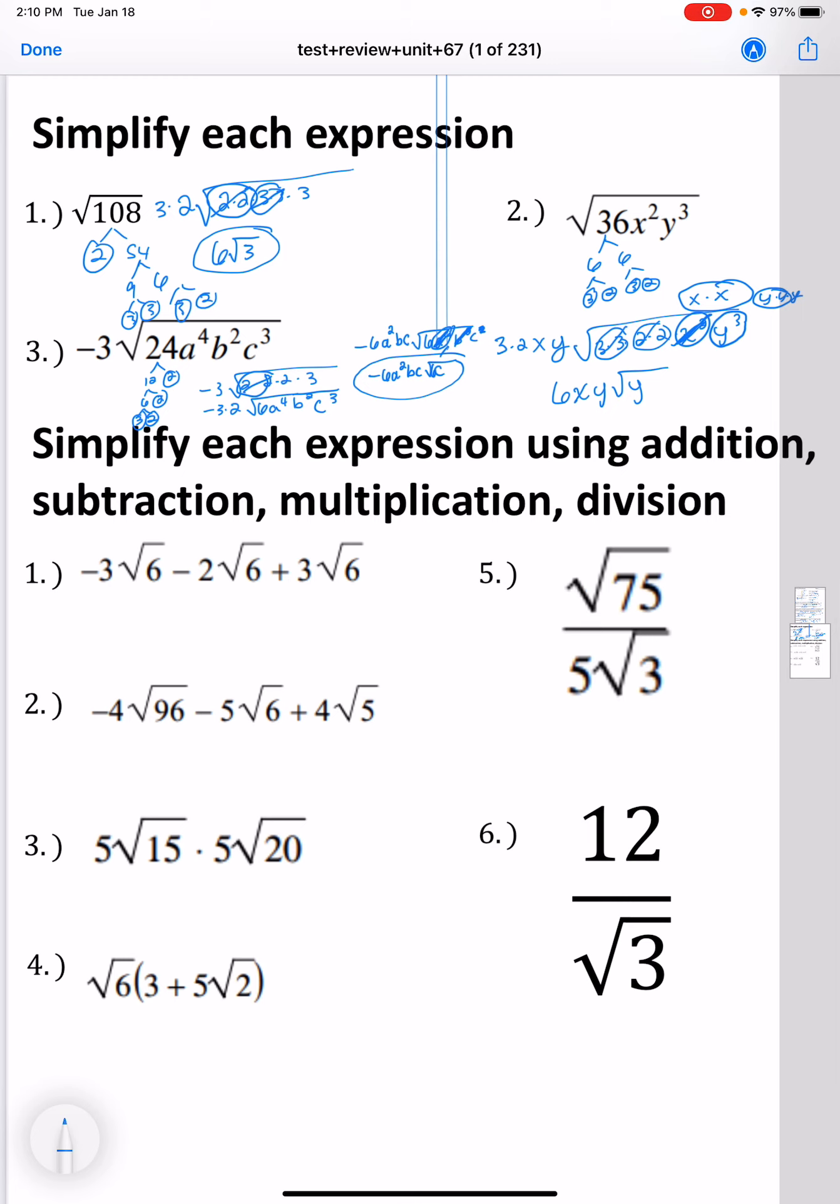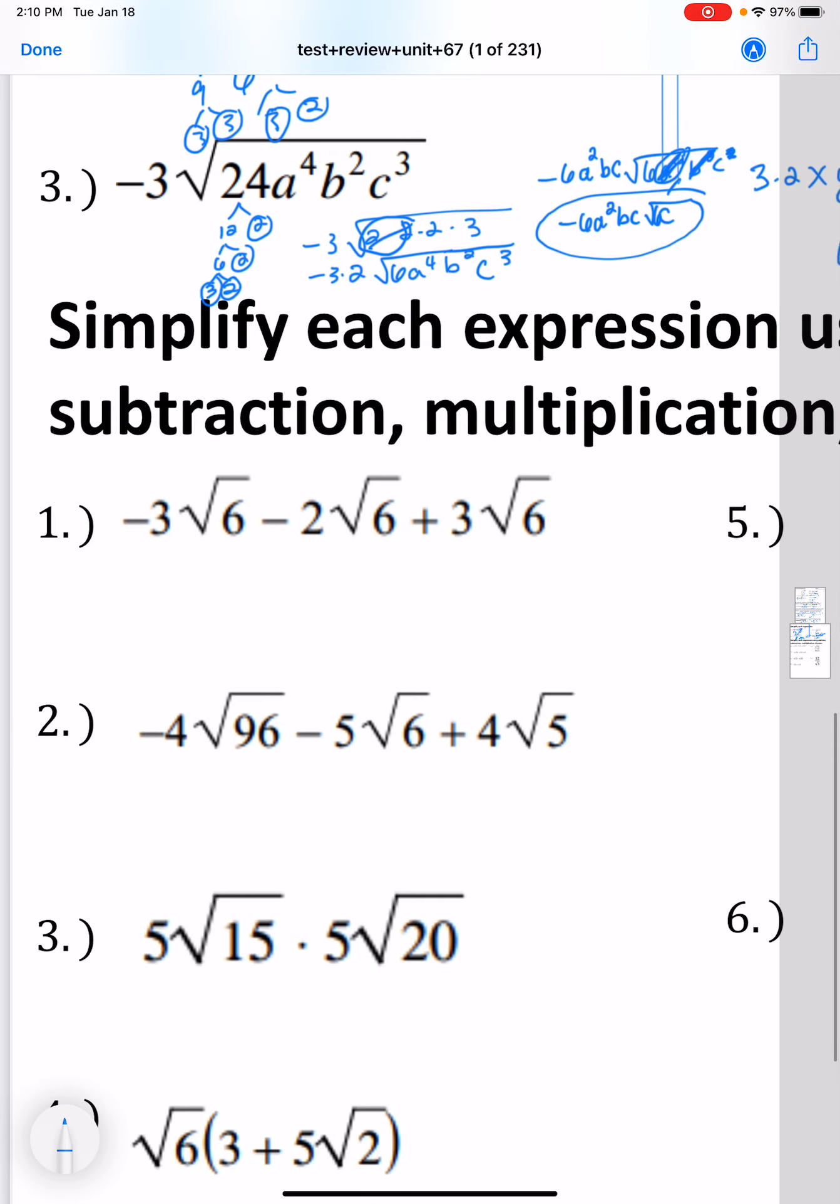Okay, our next one is where we actually use all of the different operations here. So the first one is, everything's already simplified, we just need to combine like terms. So we do -3 - 2 + 3. The number on the inside of the radical will stay the same for addition and subtraction only. So we add -3 - 2, which is -5, plus 3 makes -2.